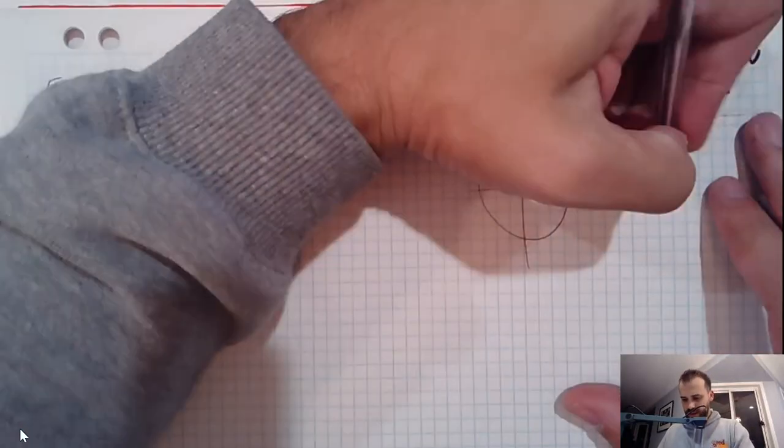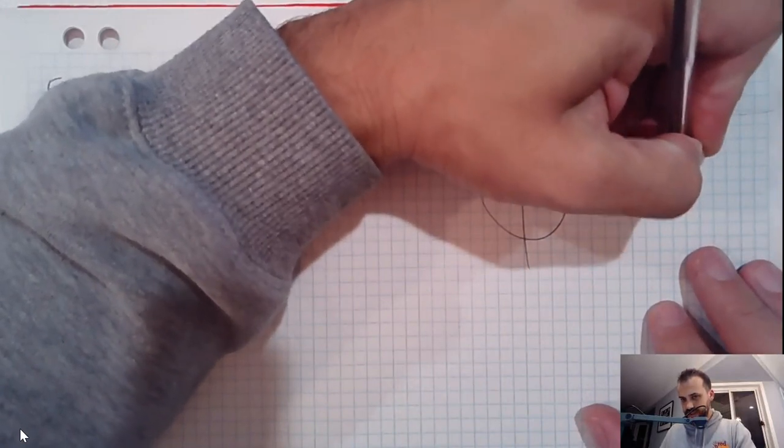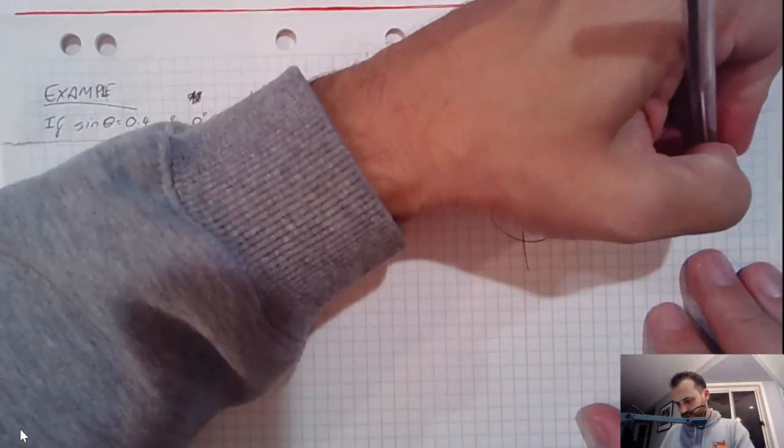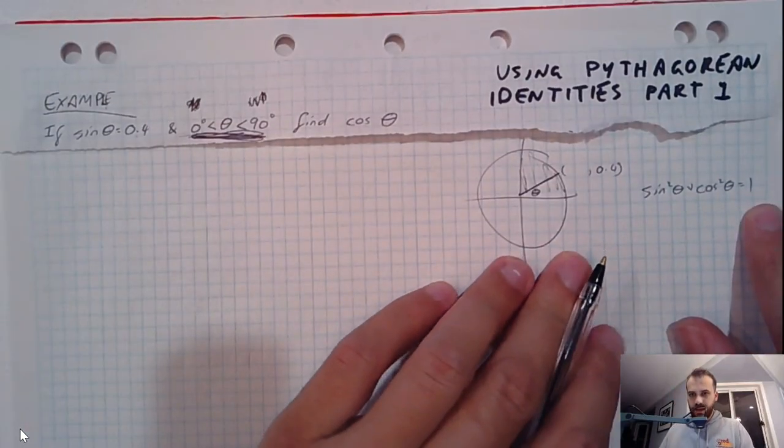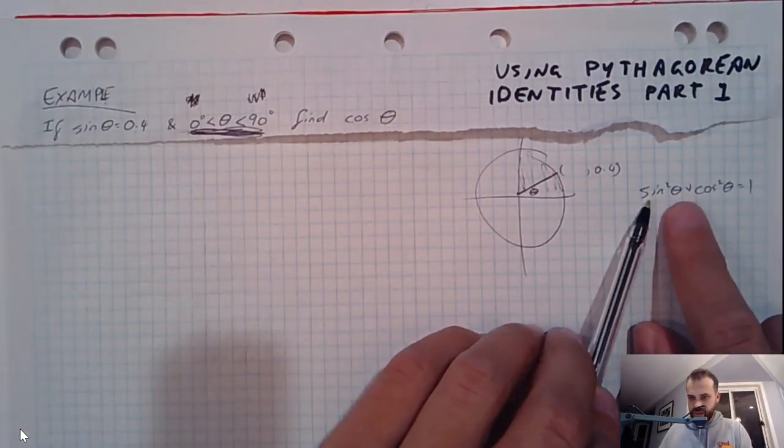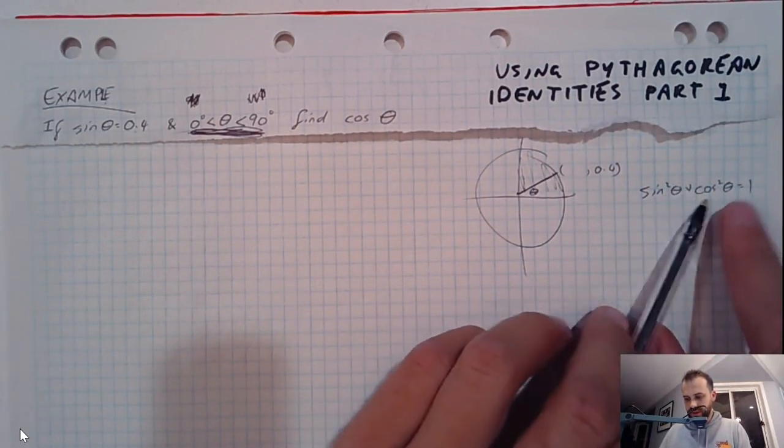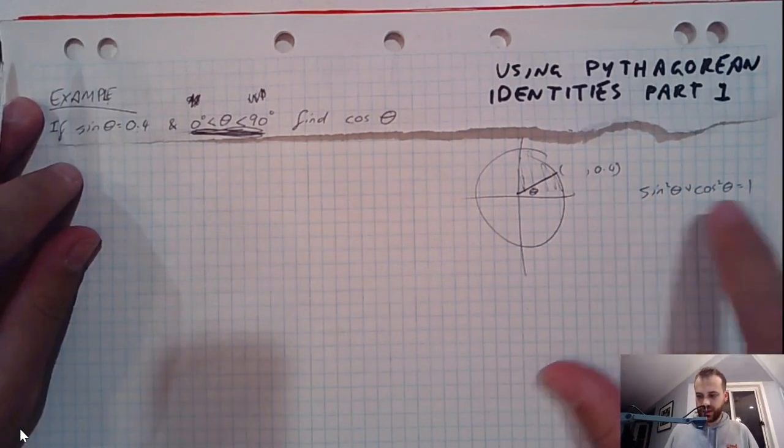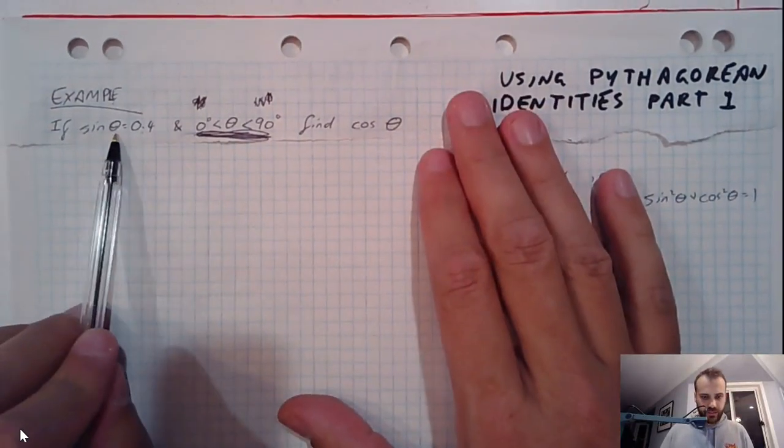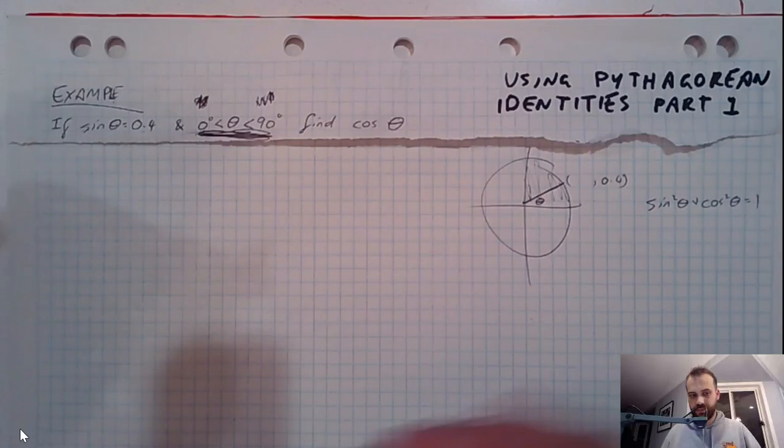Pythagorean identity is going to help us. Remember the Pythagorean identity says that sine squared theta plus cos squared theta equals 1. Now remember that says sine theta all squared plus cos theta all squared equals 1. Good. So now that we've got a relationship between sine theta and cos theta, if we know one of them, we can find the other one. That's what the question's about.